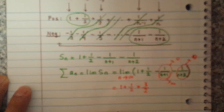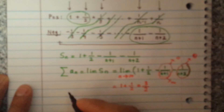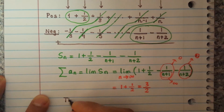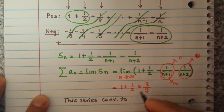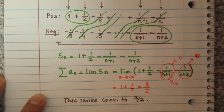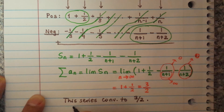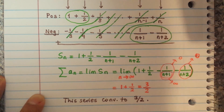Since we found the sum to be 3 halves, we can write that this series converges to 3 halves. So it is converging and it converges to 3 halves. That's an example of a telescoping series. Thanks for watching and I'll see you next time.